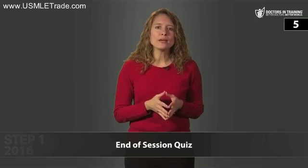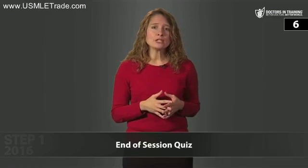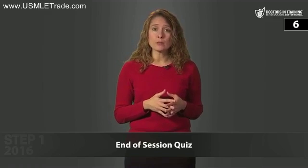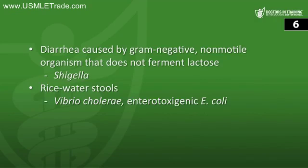Which form of E. coli causes hemolytic uremic syndrome? Enterohemorrhagic E. coli, especially E. coli O157:H7. What infectious agent corresponds to: diarrhea caused by a gram-negative non-motile organism that does not ferment lactose? This is Shigella. Rice-water stools? This is classic for Vibrio cholerae, but remember enterotoxigenic E. coli has a similar heat-labile toxin, so it would look very much the same.